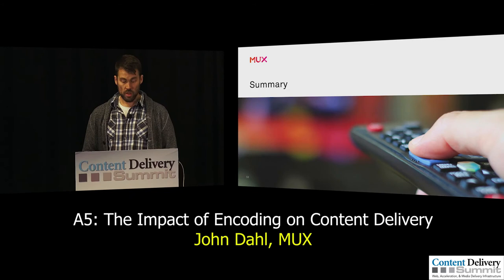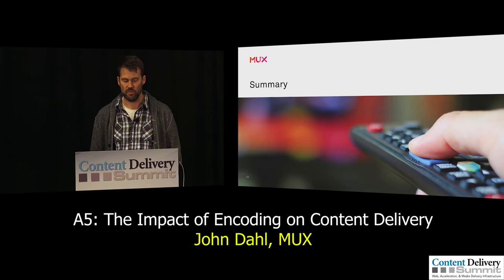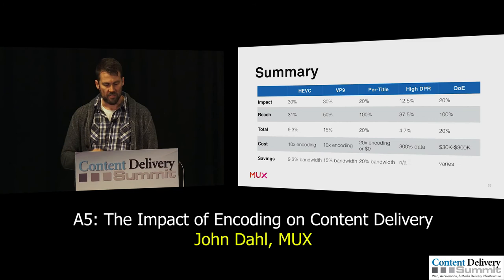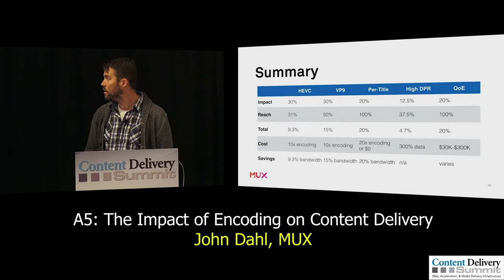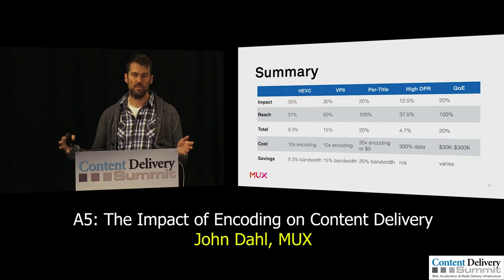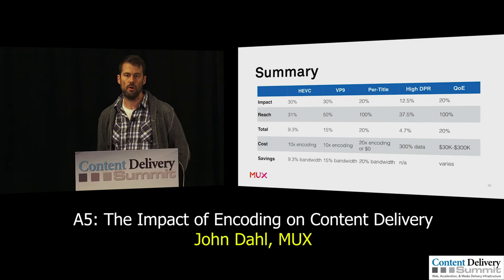So that's it. We've talked about four ways of improving video quality in the real world. Per-title encoding and QoE are powerful because they affect everyone — every single one of your viewers. The others affect certain viewers based on device. But you can do all these things today without waiting for AV1 or whatever's next to get better quality. Thanks.